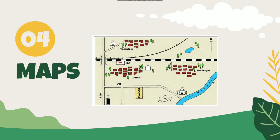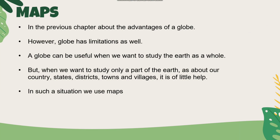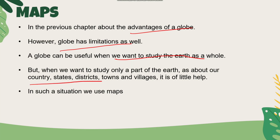This is the next lesson on Geography Chapter 4, Maps. We have already learned about the globe's advantages and disadvantages. The globe has some limitations. When we want to study a part of Earth, or about a country, state, or district, we don't use the globe.